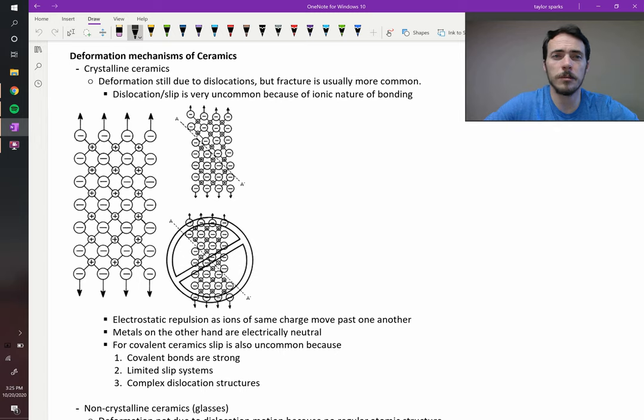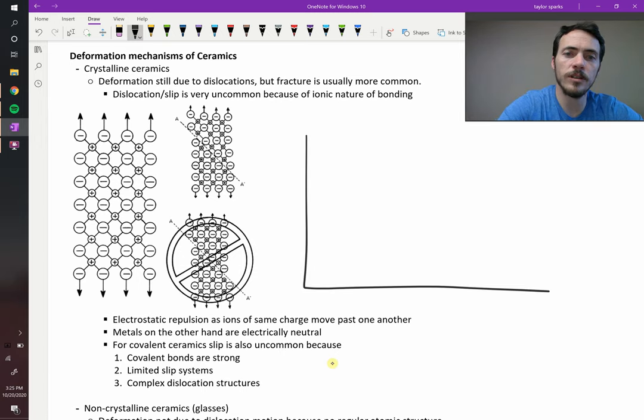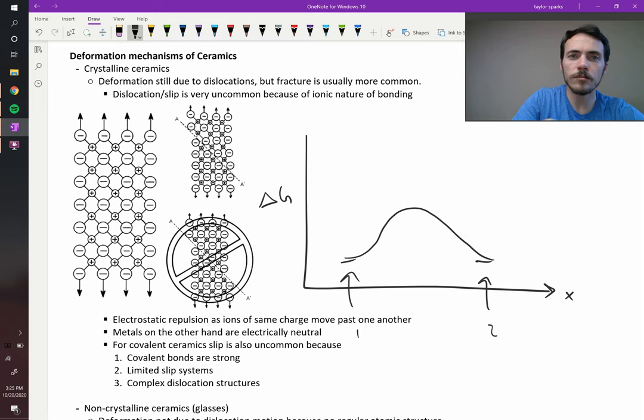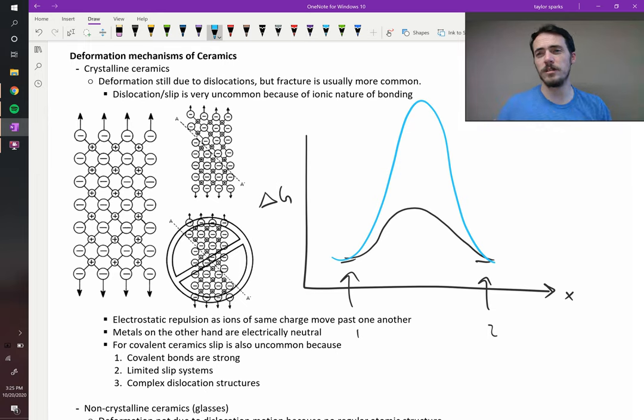Dislocation can happen in ceramics, but it's way less likely. Remember before, where we plotted the change in energy necessary as you slid atoms past each other? Some distance, we'll call it just x on this axis. We were down here at the positions, like these are our normal positions. Position one, position two. And for a metal, it looked something like this. Well, for a ceramic, it would look something like that. It has a much higher intermediate state.